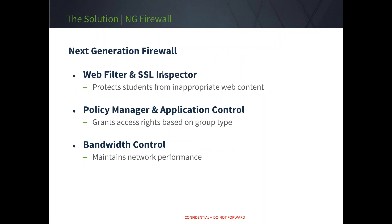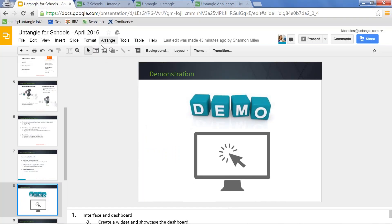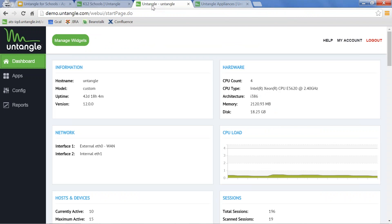Just before we step into the demo: Web Filter and SSL Inspector work great together and will protect your students from inappropriate web content. Policy management and application control allow you to set policies based on groups as well as set rights within a website or URL itself. And bandwidth control will allow you to maintain your network's performance day-to-day or hour-by-hour on campus. Let's hop into the demo. For those not familiar with Untangle, I've gone to untangle.com, scrolled over NG Firewall, and clicked on the live demo server — this is available to everyone at any point.